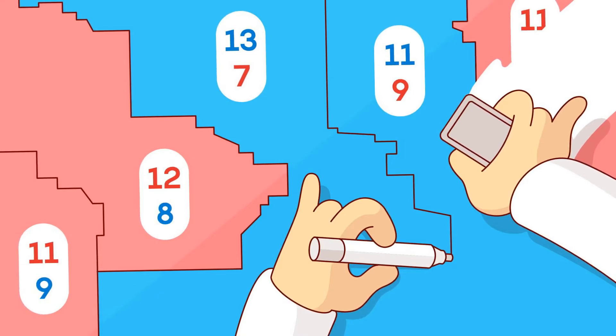By determining who votes where, politicians can tilt the odds in their favor and defeat their opponents before the battle even begins.